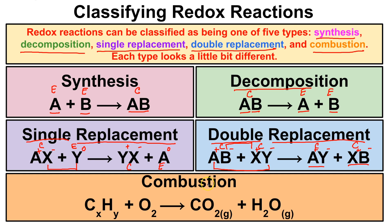In a combustion reaction, you're going to have oxygen on the reactant side all by itself reacting with a hydrocarbon — a compound that contains only carbon and hydrogen. Anytime you have O₂ all by itself on the reactant side reacting with a hydrocarbon, that is a combustion reaction. Carbon dioxide gas and water vapor will be the products 100% of the time. In a first year chemistry course, whenever a hydrocarbon reacts with oxygen, that is a combustion reaction.